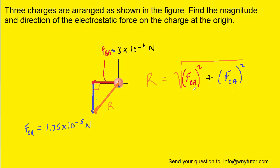We can label that R for resultant, and then we can use the Pythagorean theorem to find the resultant, because we have a right triangle. Here is the expression for the resultant. On your calculator, you can plug in the value we found for FBA and the value we found for FCA. When you do that, you should get approximately 1.38 times 10 to the minus 5 Newtons. That will be the overall magnitude of the resultant force acting on the charge at the origin.